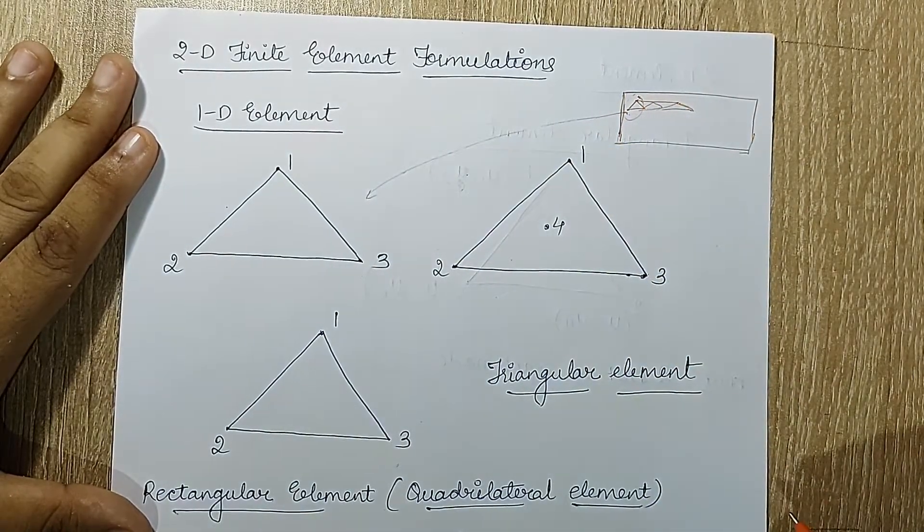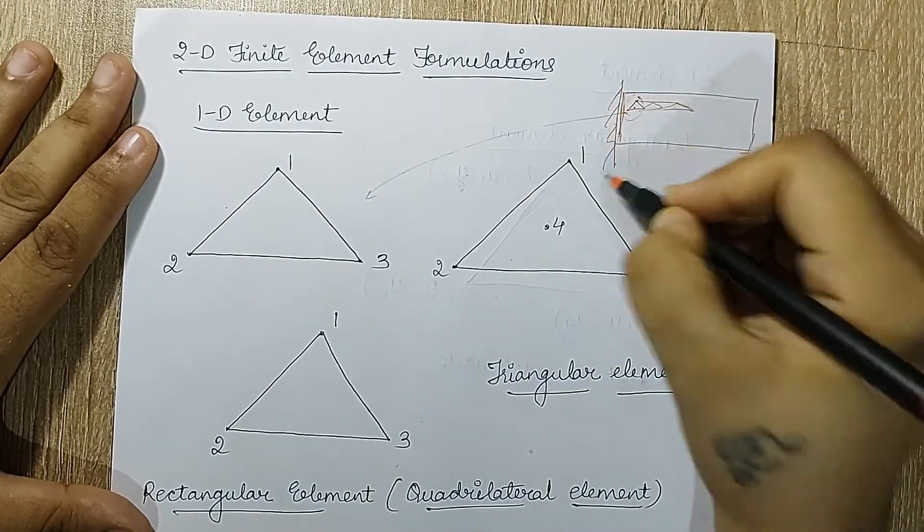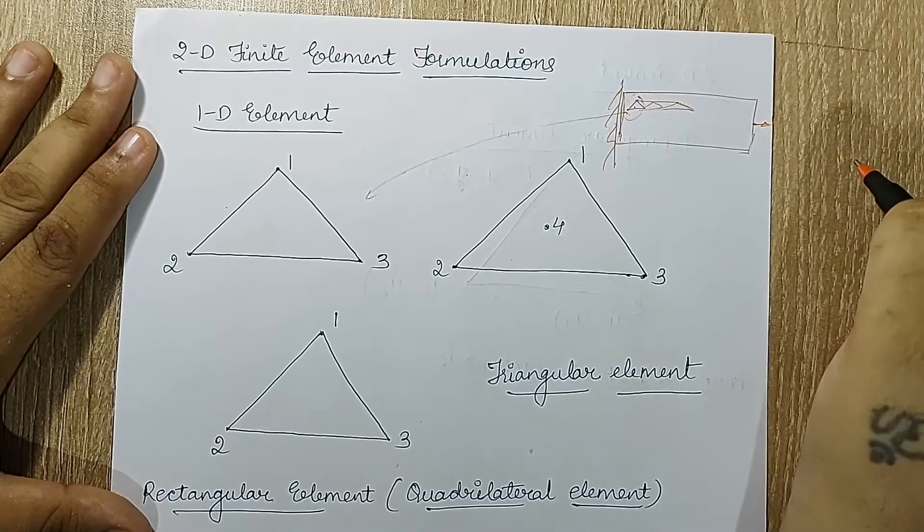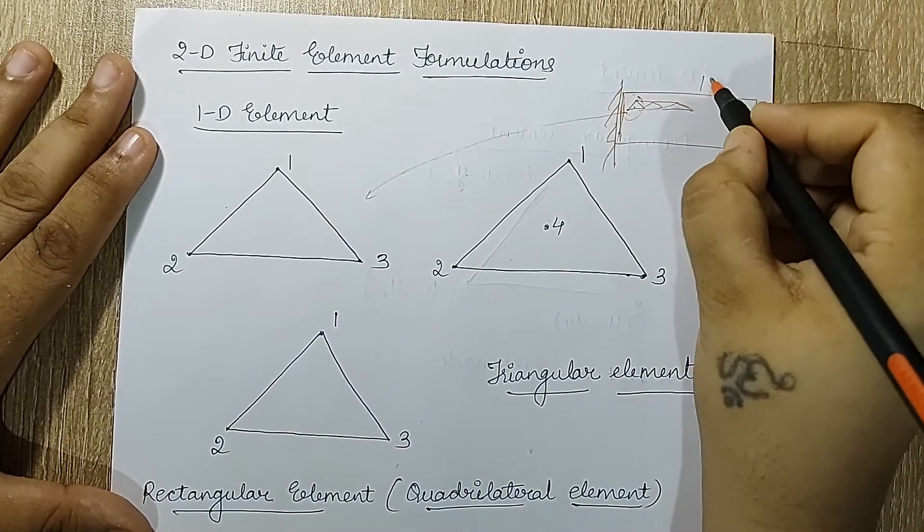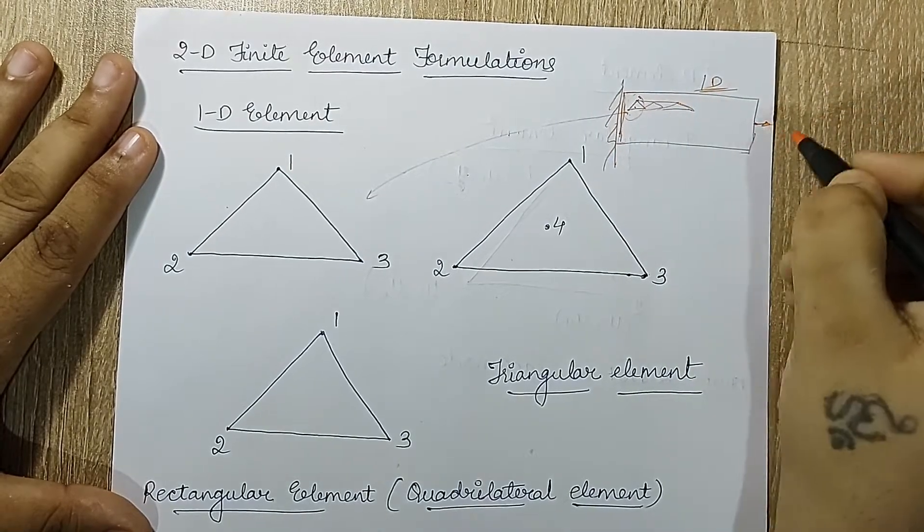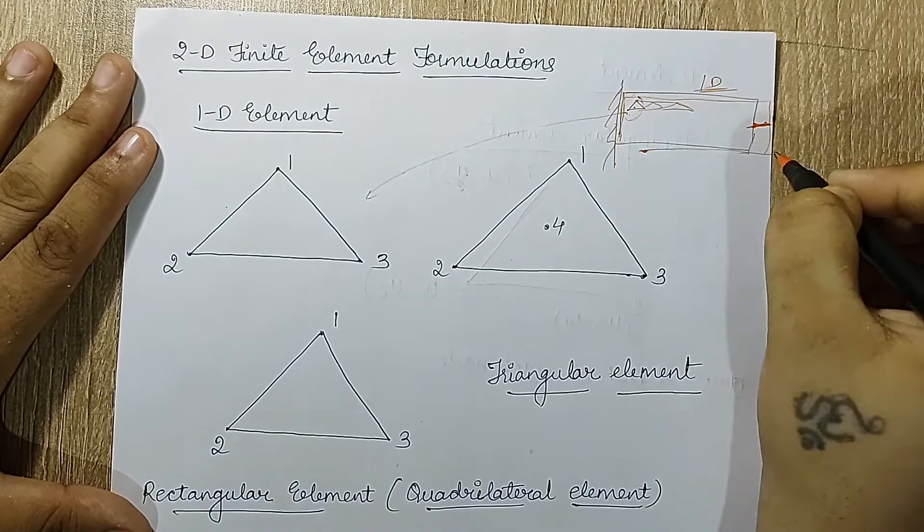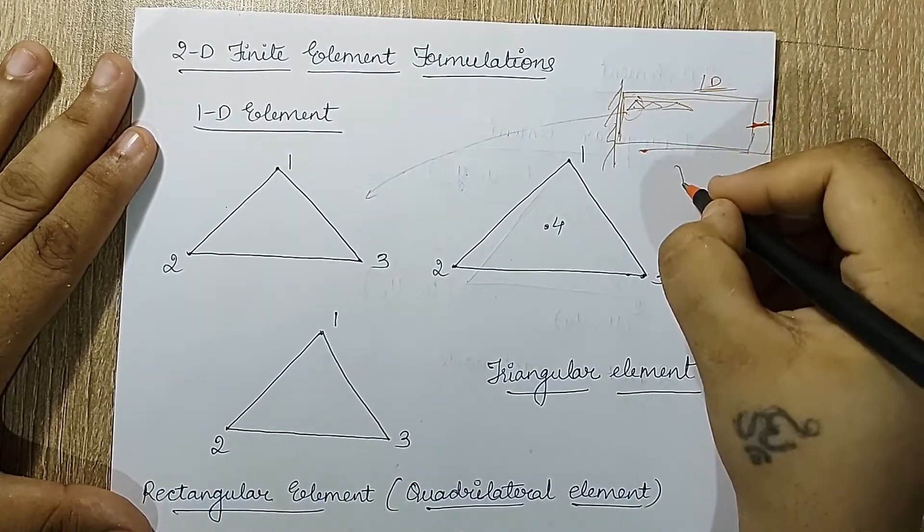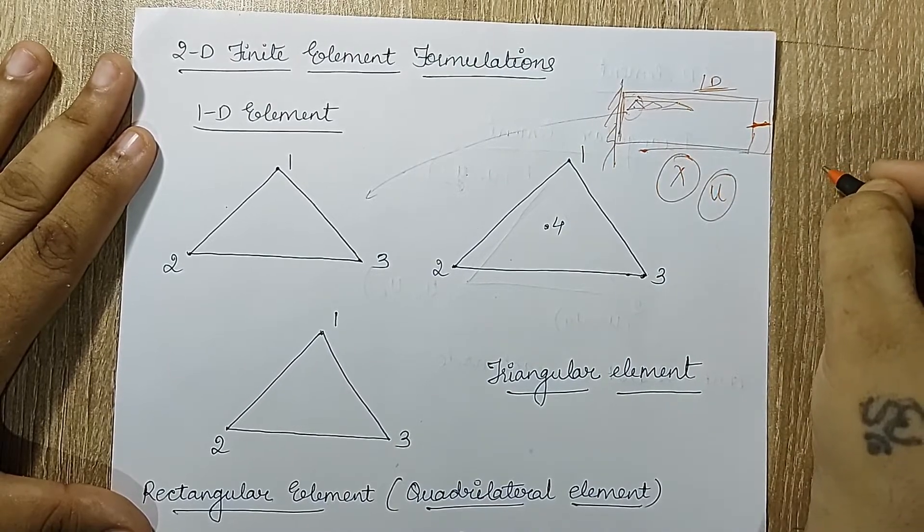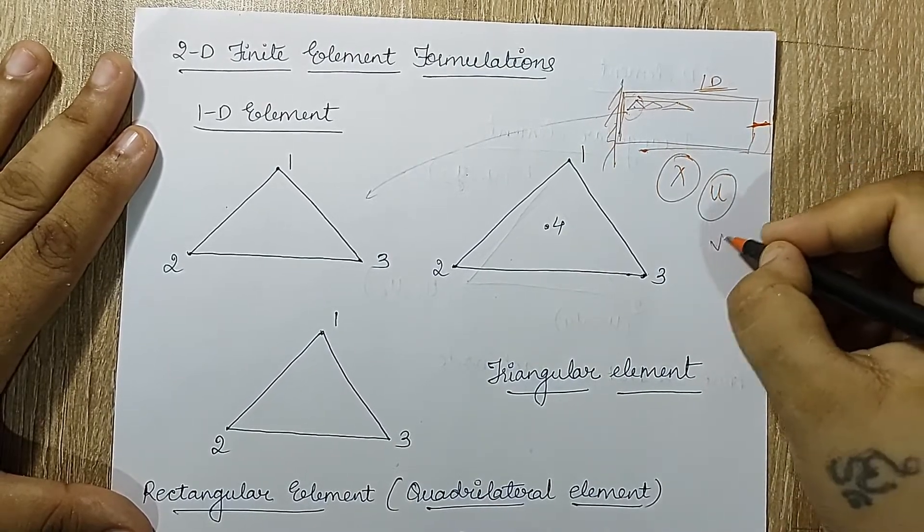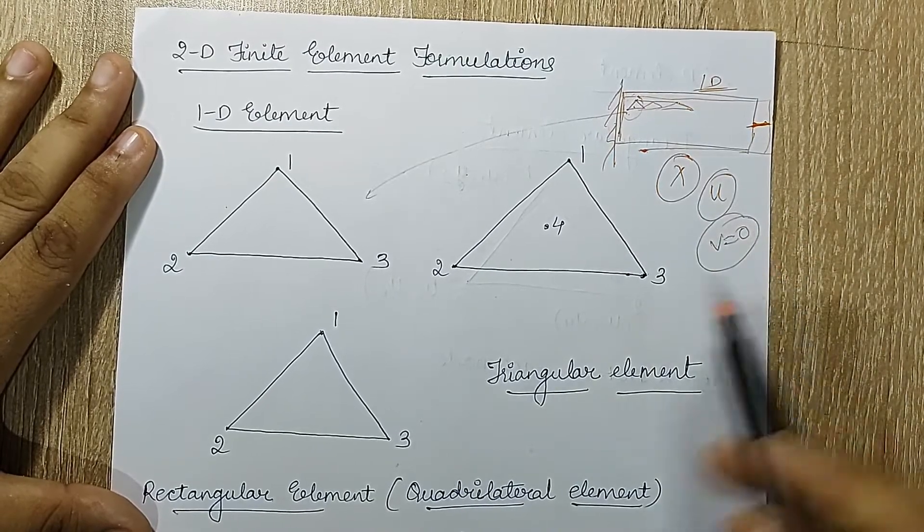Suppose if I say that this end is fixed and this end is subjected to some sort of load, and I am studying only one directional change. When the load is applied from here, this element will increase in length, so there will be a change in x direction. I want to know the deformation u which is in the x direction. I don't want to know v because this will be zero. This kind of analysis is called 1D element analysis.